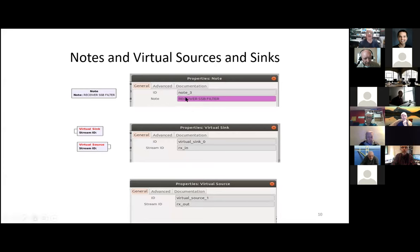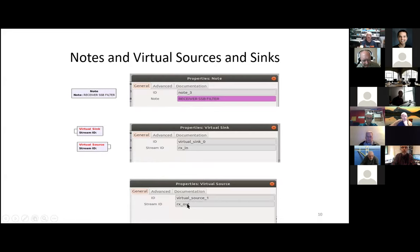Here are the notes again. This is an example of a receiver single sideband filter. And here are virtual sinks and virtual sources. In this slide, you can see the commands here. This is the virtual sink labeled 'receiver in' and the virtual source should also be 'receiver in' — for some reason I put 'receiver out.' These two stream IDs should be identical, and these replace lines on a flow graph.